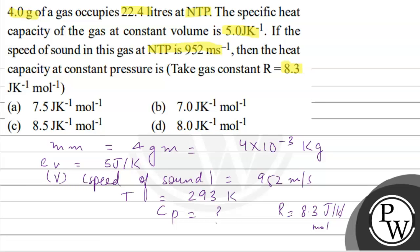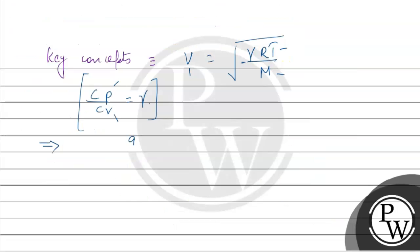Speed is given 952 meters per second. 952 equals square root of gamma times the gas constant 8.3 times 293 temperature divided by mass 4 into 10 to the power minus 3. Let's solve this.